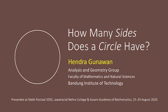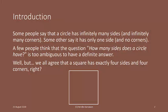How many sides does a circle have? Some people say that a circle has infinitely many sides and infinitely many corners. Some others say it has only one side and no corners. A few people think that the question how many sides does a circle have is too ambiguous to have a definite answer.